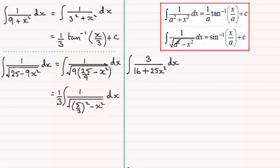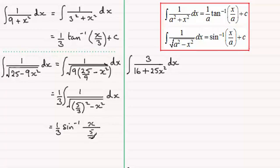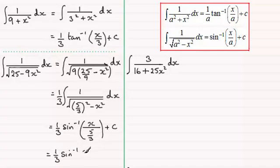So we now have this integral in the standard form where a equals 5 thirds. Substituting in, we get one third multiplied by the inverse sine of x divided by a, where a is 5 thirds. Tidying up, x divided by (5 thirds) equals 3x over 5, so the final answer is one third times inverse sine of 3x over 5 plus c.